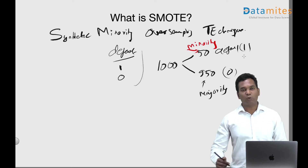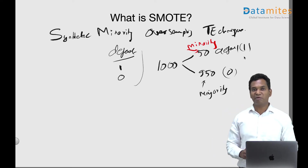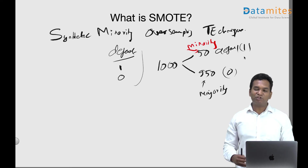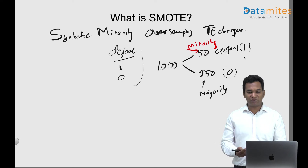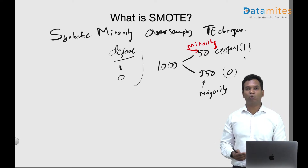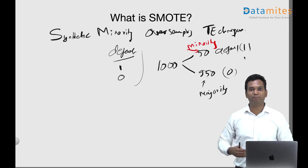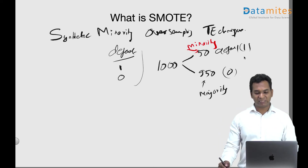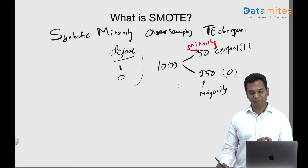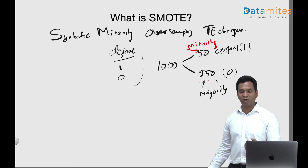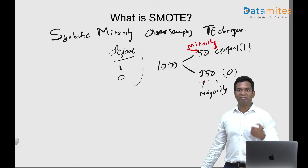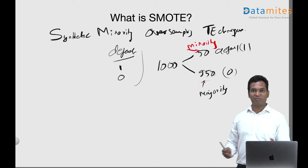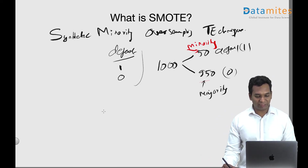Why is this a problem? If you train most machine learning algorithms, they tend to bias towards the majority class. But our goal is to find the defaulters so we don't give loans to them. However, the model biases toward the majority class for a simple reason: the model's goal is to maximize accuracy. If it simply labels every record as non-default, it still achieves 95% accuracy because that's the majority class.